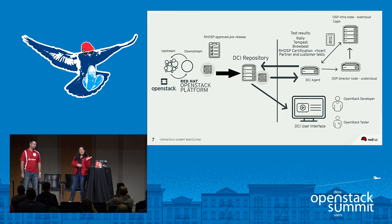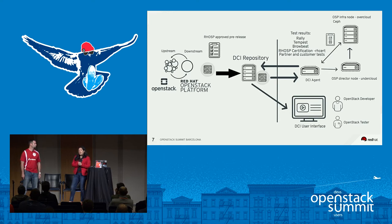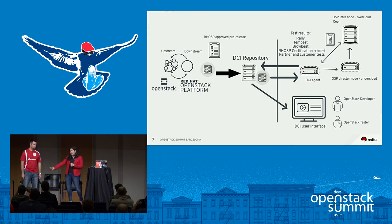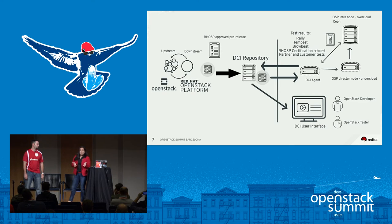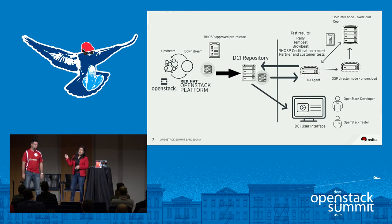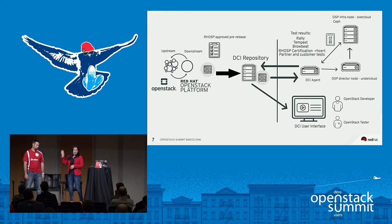Whenever we have a pre-release OpenStack kind of ready to go, we put it on a DCI repository. After installing a DCI agent on the Rackspace environment, this agent picks up every new release and all new changes, then orchestrates the deployment using Red Hat OpenStack director — an automated deployment of an OpenStack cloud — including both the undercloud, the director node, and the overcloud with the infra nodes.